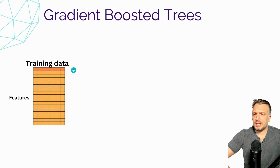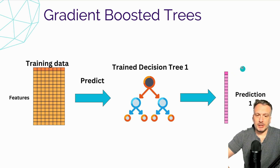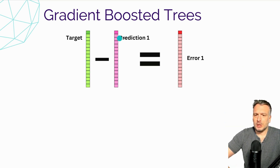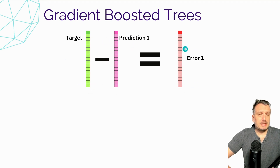We take the same training data, use the decision tree that we just trained, and predict on it to get some predictions. We look at these predictions, compare them to the target, and the differences between the predictions and the target are the errors — the errors we are making when predicting with this newly trained model compared to the target.